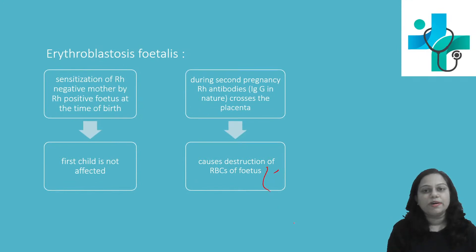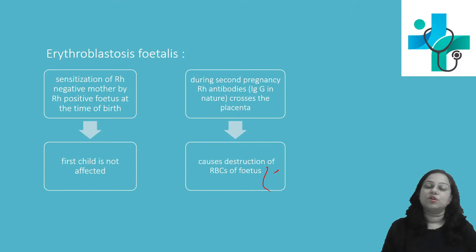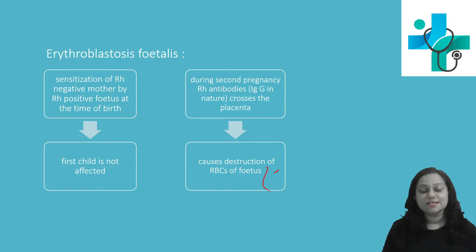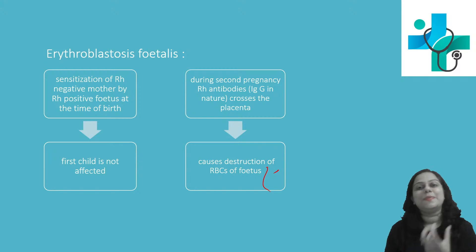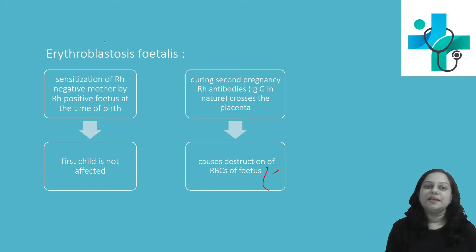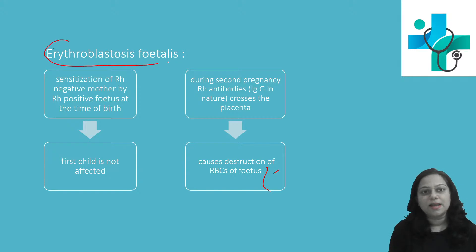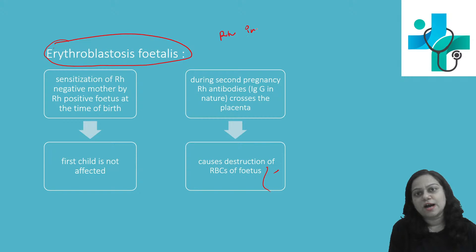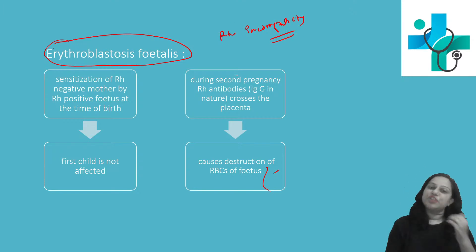The first and important one is erythroblastosis fetalis. Understand the word carefully — erythroblastosis fetalis. In this type of hemolytic disease of the newborn, you will find blast cells in the circulation. This is a form of RH incompatibility, and hemolytic disease occurs because of RH incompatibility.